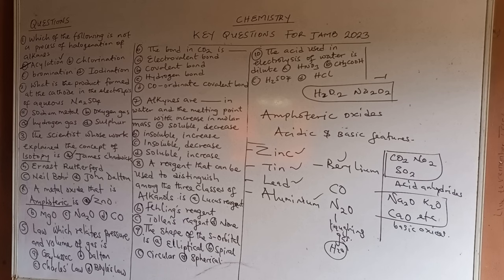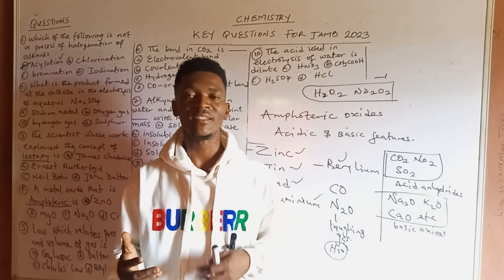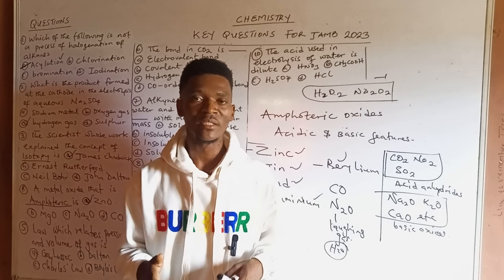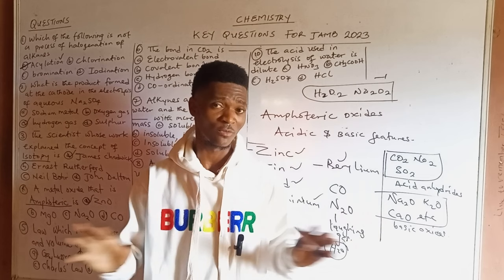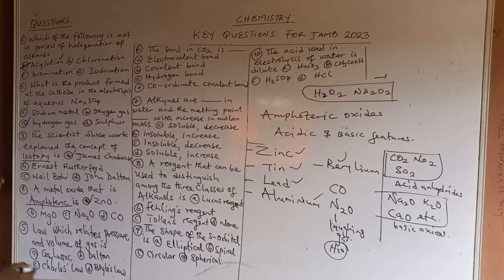Question 5: The law that relates pressure and volume of a gas. It's obviously Boyle's Law, which states that the volume of a given mass of gas is inversely proportional to its pressure — volume and pressure are inversely related — provided temperature remains constant. Temperature is not relevant in Boyle's Law. That's the only gas law relating pressure and volume. The answer is D.